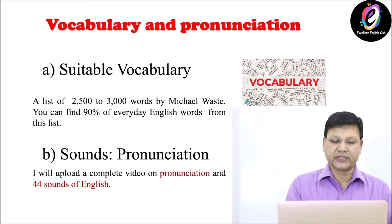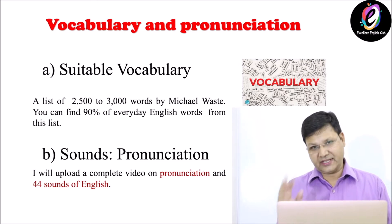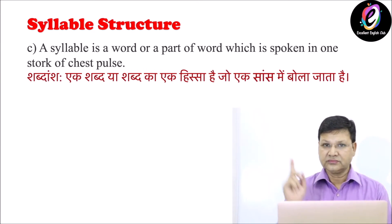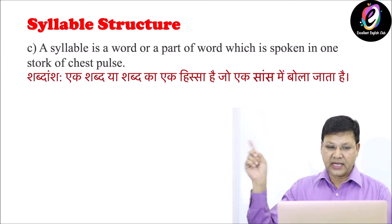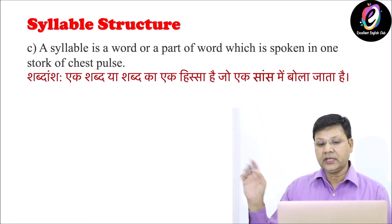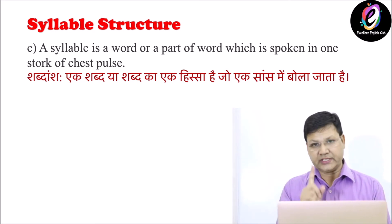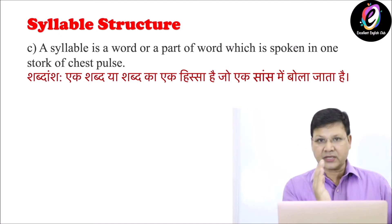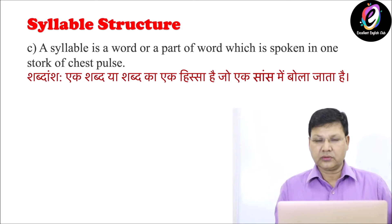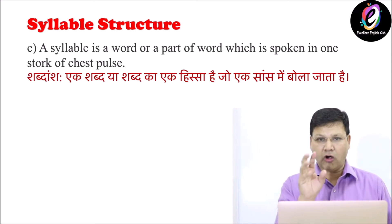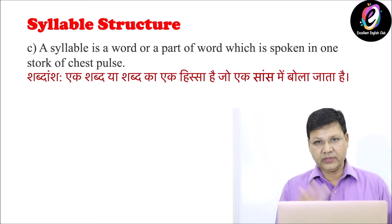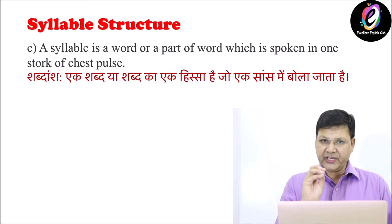Now move to the next point: syllable structure. This is a very important element. A syllable is a word or a part of a word which is spoken in one stroke of chest pulse. For example, if I say 'dog' — it is one stroke. 'Cat' — one stroke. So if we have one stroke, that is one syllable. If we have two strokes, for example 'today' — two strokes — it means this word has two syllables.